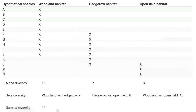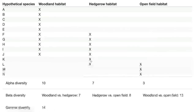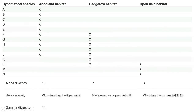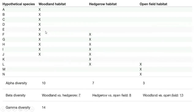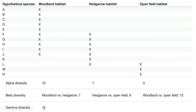Gamma diversity is the total number of species across all regions. Counting from 1 to 10 in woodland, then 11 in hedgerow, and another 3 in open field gives 14. We don't double-count species already counted — so continuing from 10, we get 11, 12, 13, and 14. Gamma diversity equals 14.